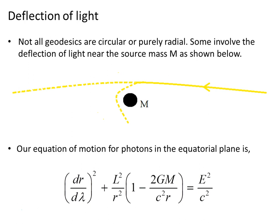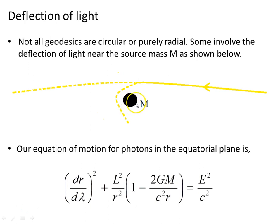Not all geodesics followed by light are circular or purely radial. Some involve a deflection of light near the source mass m. Sometimes the deflection of light near a Schwarzschild mass will be small, sometimes it will be a large deflection, and sometimes it will result in a plunge orbit right into the mass itself, ending at the centre. We want to have a look at those forms of motion in this video.